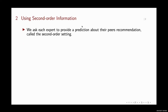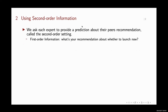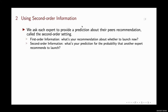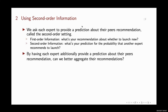So we consider second-order information here. We ask each expert to provide a prediction about their peer's recommendation. This is called the second-order setting. In our motivating example, the first-order setting means we simply ask what's the recommendation about whether to launch now. The second-order setting means we additionally ask what's the prediction for the probability that another expert recommends to launch. Our research problem is: by having additional second-order information, can we better aggregate their recommendations?